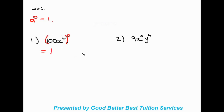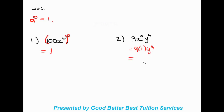Now the difference: nine x to the power of zero, y to the power of four. Here the zero exponent only affects x. So x to the power of zero equals one, and that one doesn't change anything else. Our final answer is nine y to the power of four.